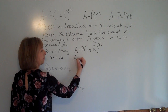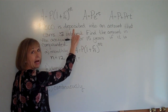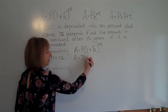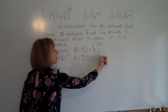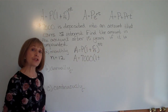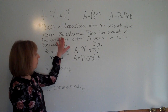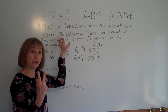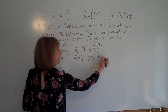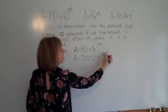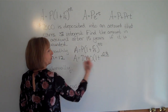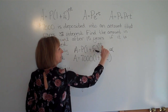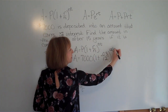For our specific problem, the principal is $7,000. Our rate is 3%, which in decimal form is .03 — you move the decimal point two places to the left. So we have 7,000 times (1 plus .03 divided by 12) raised to the power of 12 times 15.